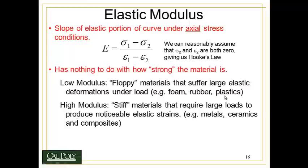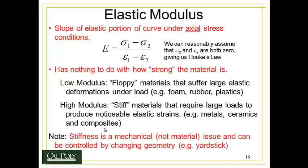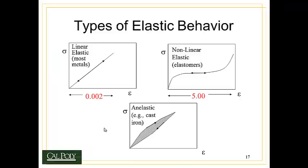It's important to remember that elastic modulus has nothing to do with how strong the material is — it's all about how stiff the material is. Low modulus materials are floppy, things like foam, rubber, and plastics. But high modulus materials are stiff, things like metals, ceramics, and composites. Stiffness is a mechanical and not really a material property, and can be controlled by changing the geometry. Remember the example of the yardstick: it's floppy when laid flat, but if you sit it on its edge and try to bend it, it gets much more stiff. That's mechanical stiffness. But the elastic modulus of the material has not changed — it's the same material with the same properties, just the geometry that's changed.